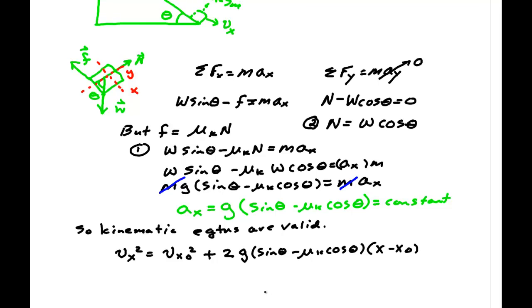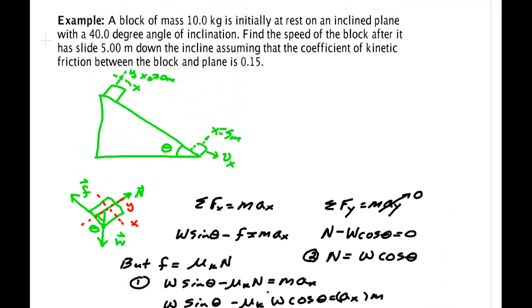Now let's go back and look for a minute what we had. We had 10 kilogram mass. Turns out you don't even need to know anything about that. You need to know that theta was 40 degrees. You need to know that x minus x naught is 5 meters. It says it's initially at rest. V x naught is 0 meters per second.